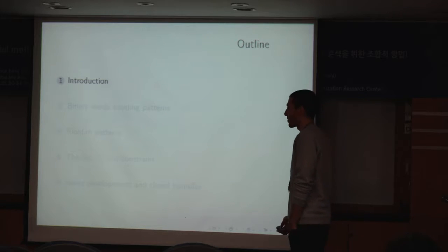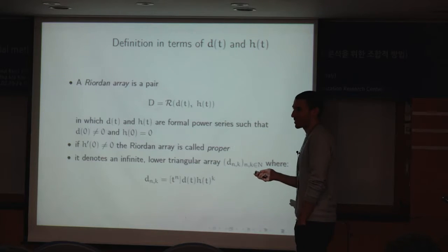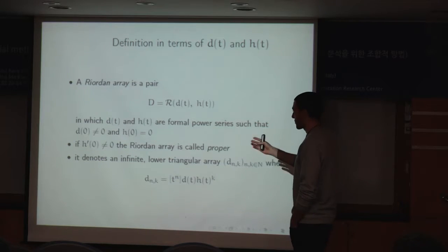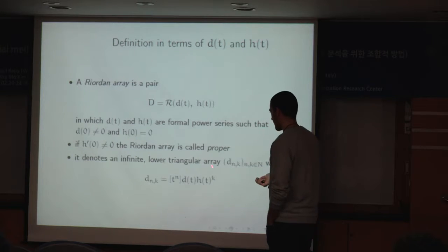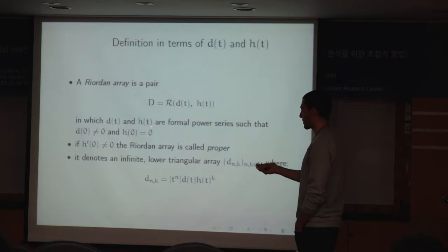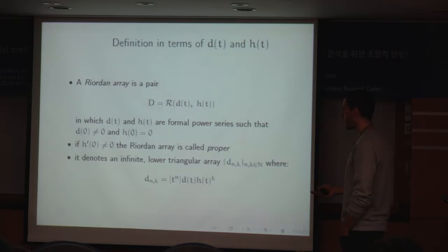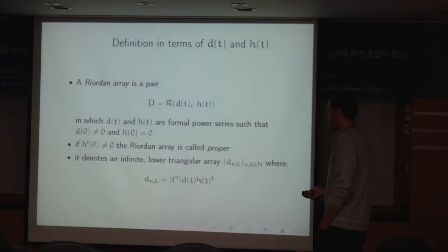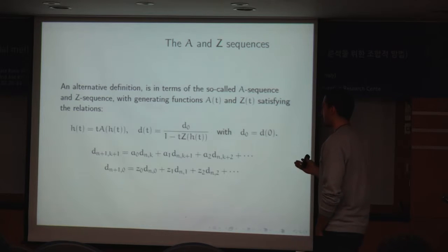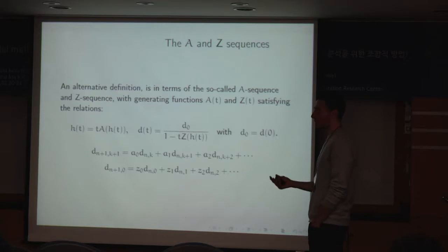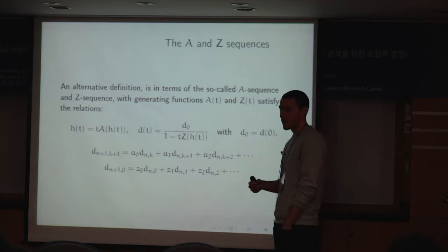Thank you for this nice talk, Professor Berry, because my introduction is essentially just a very quick review. We play with Riordan arrays: we have a pair of functions d and h, and we work with proper Riordan arrays, so h of 0 is required to be 0. This pair denotes an infinite lower triangular array where the coefficient at row n and column k can be computed by extracting the n-th coefficient from the k-fold convolution of function h with itself, convolved with function d. We have two special sequences, the A and Z sequences, that allow us to express a generic coefficient as a combination of coefficients lying on the row above.